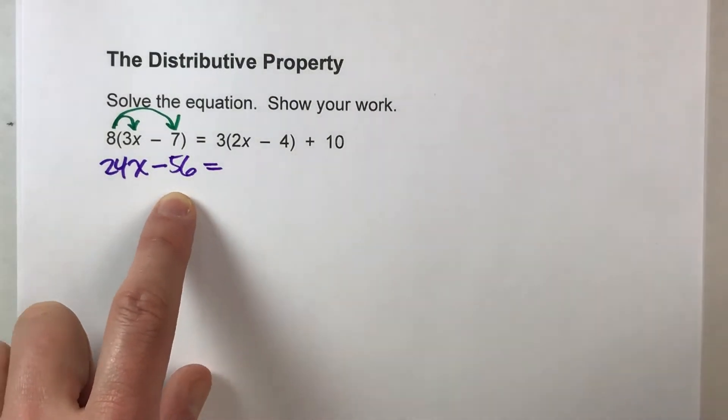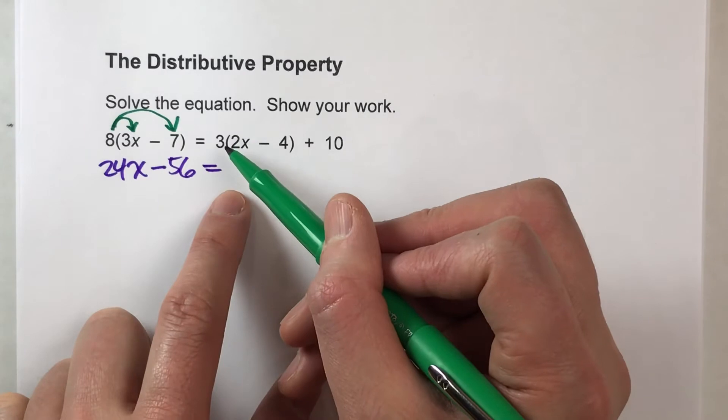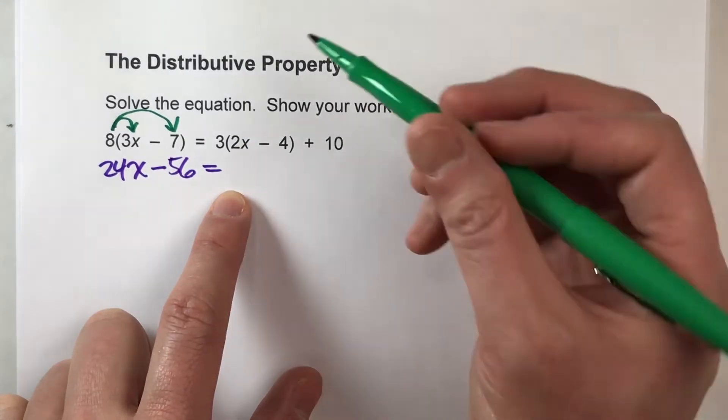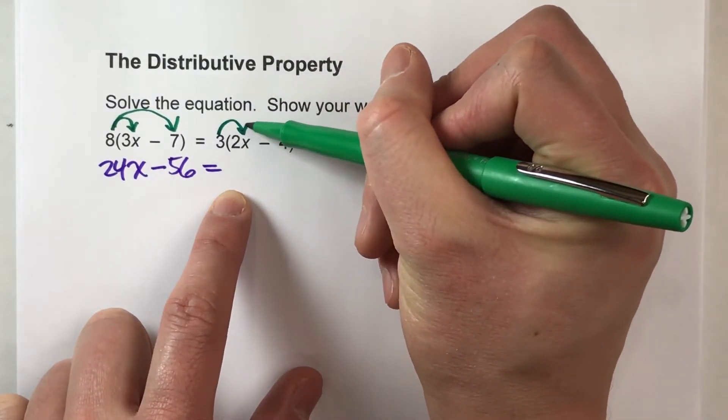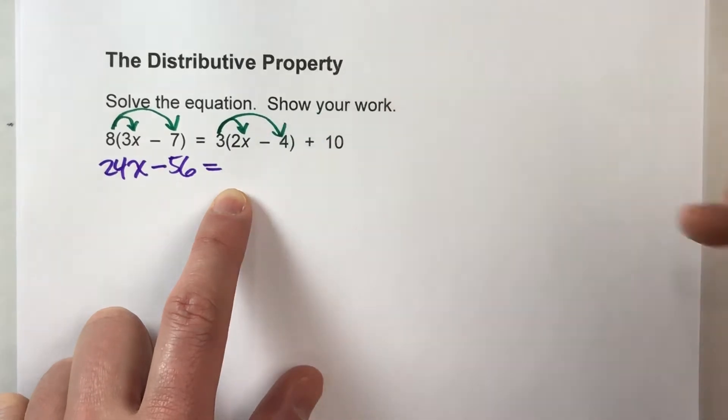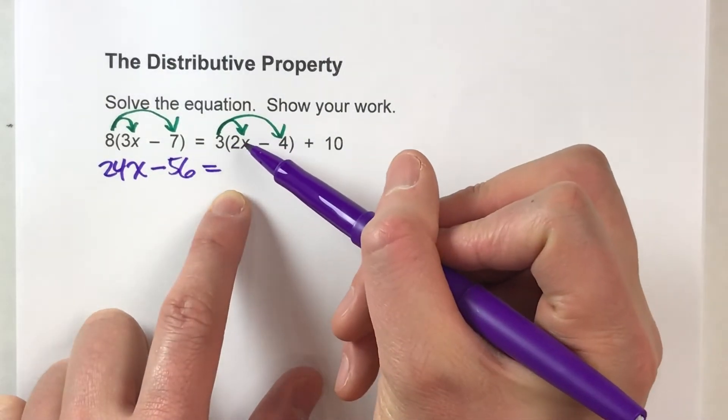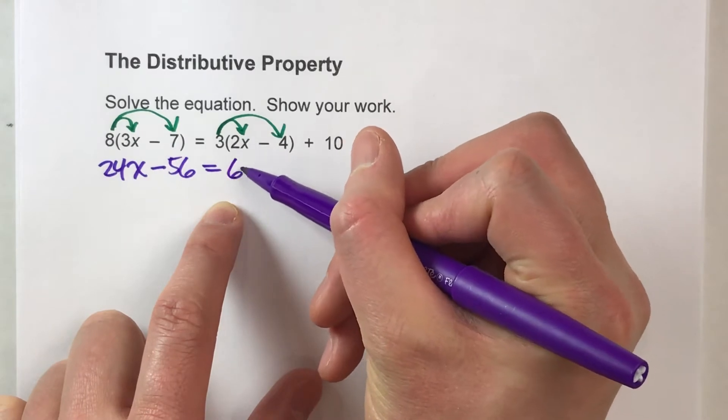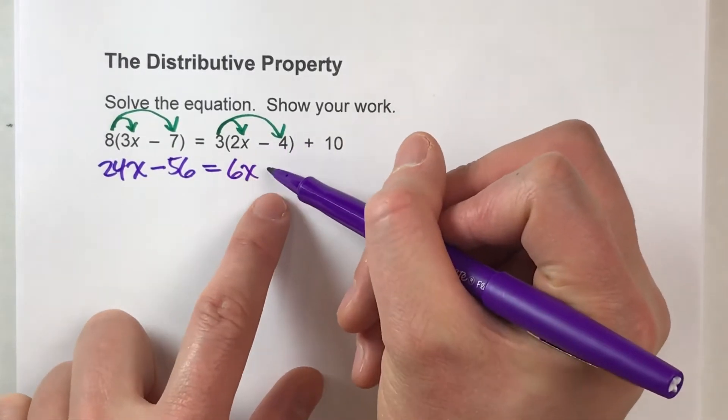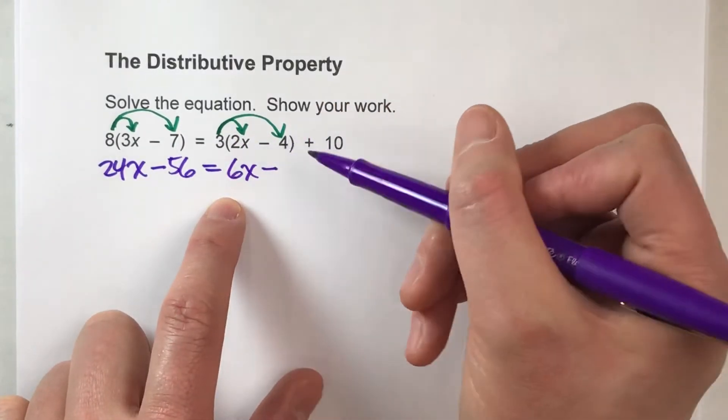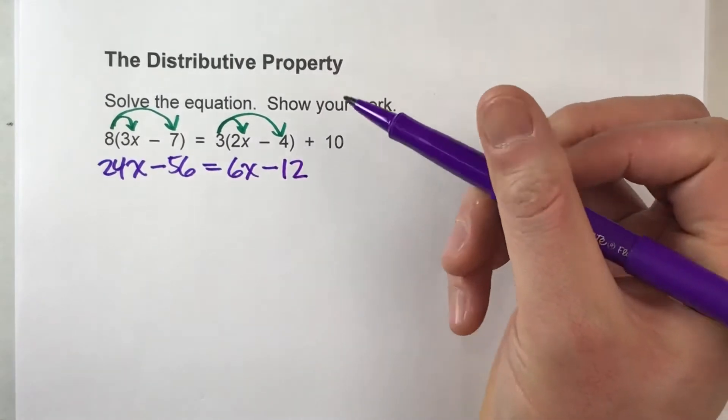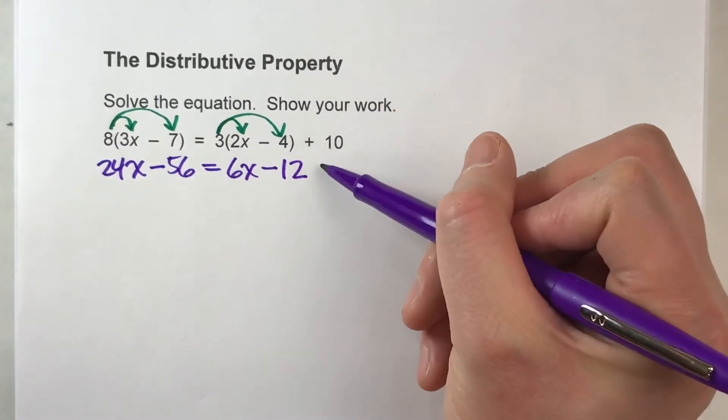On the other side, we have another set of parentheses with something being multiplied by it. So we're going to have to distribute that 3 times everything in the parentheses. 3 times 2x is 6x minus 3 times 4, 12. And then I'll drop down the plus 10.